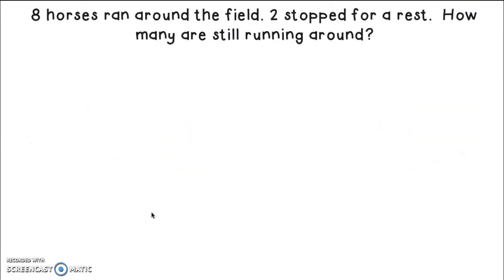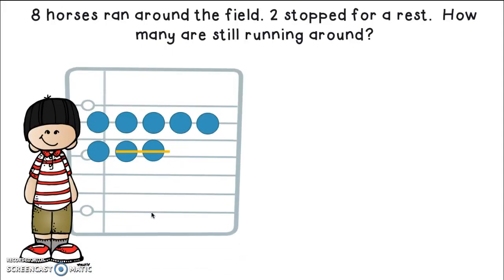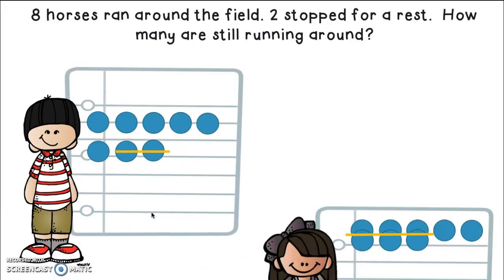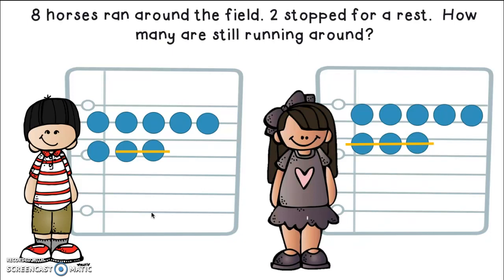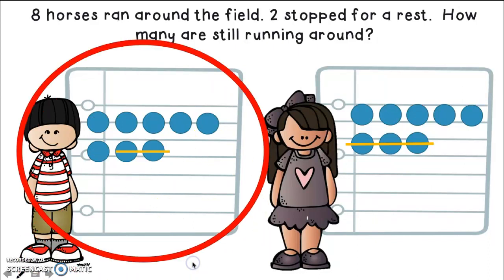Let's read it again. Eight horses ran around the field. Two stopped for a rest. How many are still running around? Shane drew this good picture and Kara drew this good picture. Their pictures look awfully similar. I want you to press pause. Look carefully. Read the problem again if you need to or rewind it. Listen to me read it and see whose picture matches. Did you figure it out? They both drew eight. It just has to do with how many they crossed out. You're right. Shane got it correct because he crossed out two.